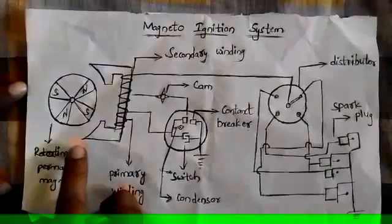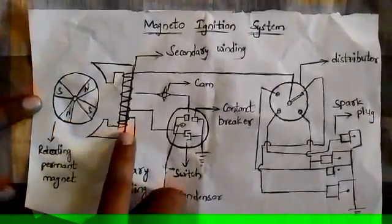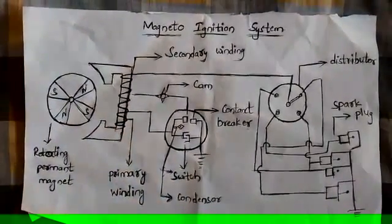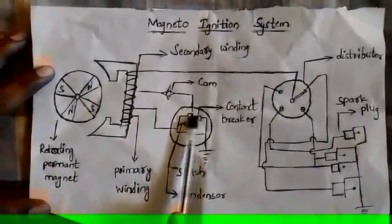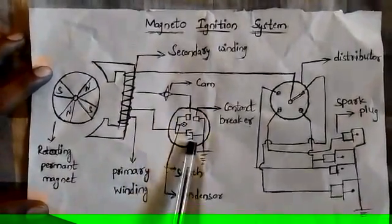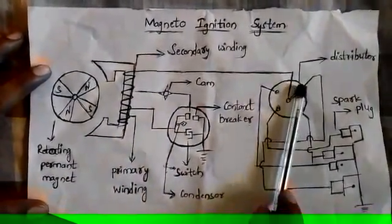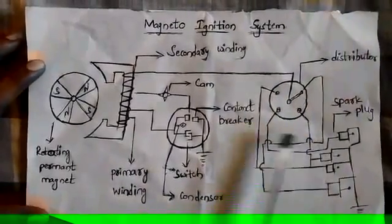The magneto ignition system consists of a rotating permanent magnet, primary winding, secondary winding, this is the cam, and the contact breaker, this is the condenser, this is the switch, and this is the distributor, and this is the spark plug. When the switch turns on,